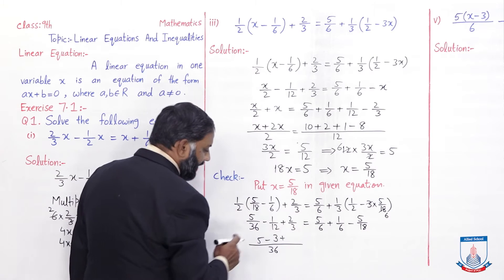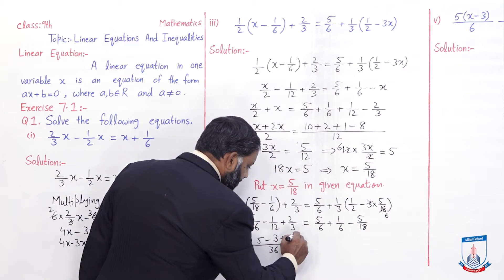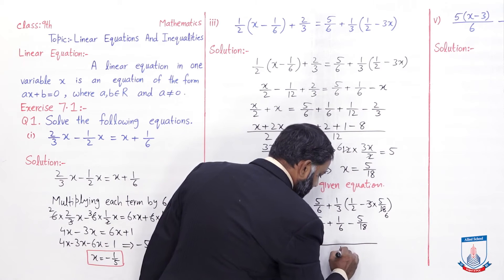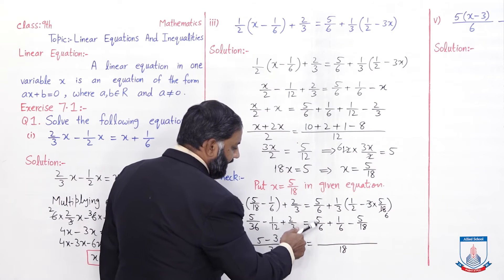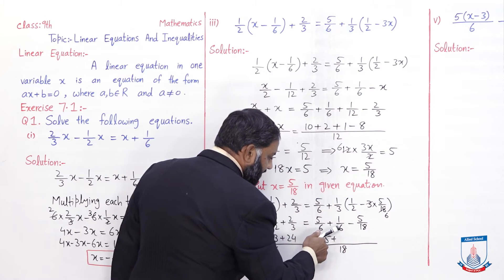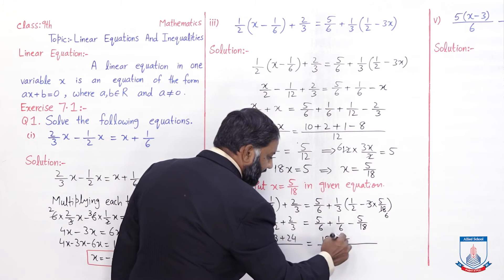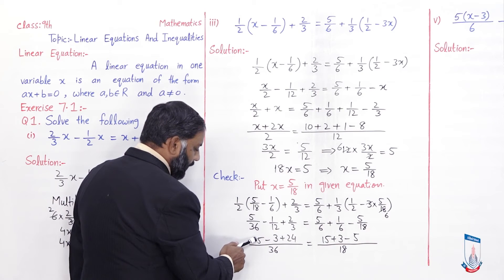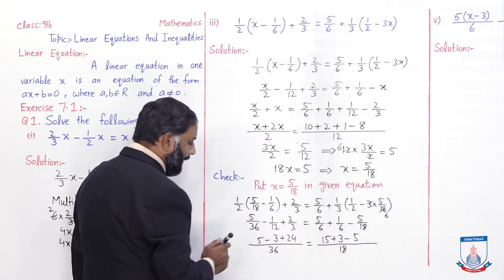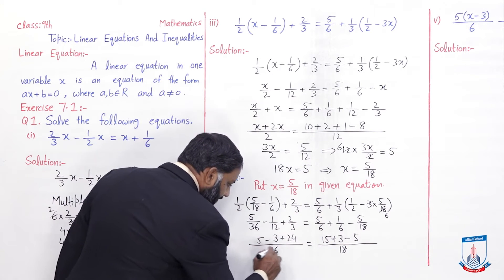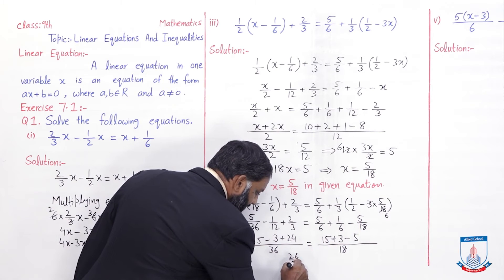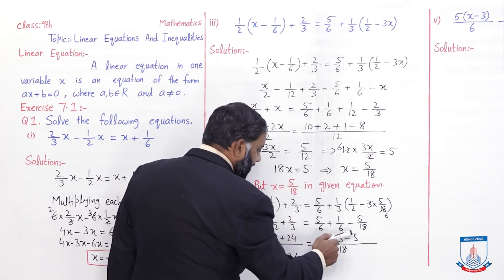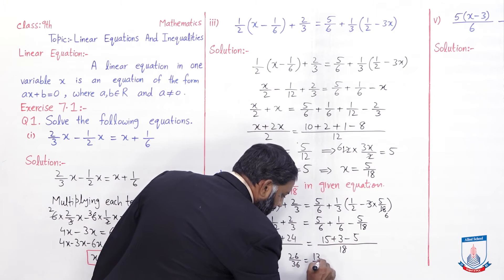Is equal to: right side ka LCM lein, LCM 18 aa jayega. 18 divided by 6 equals 3, times 5 equals 15. 18 divided by 6 equals 3, times 1 equals 3. Minus 18 divided by 18 equals 1, times 5 equals 5. Ab left side: 5 minus 3 plus 24 equals 26 over 36. Is equal to right side: 15 plus 3 minus 5 equals 13 over 18. Yahan pe left side mein cutting ho rahi hai: 2 times 13 equals 26, aur 2 times 18 equals 36. Cutting karne par left side pe 13/18 is equal to right side pe bhi 13/18.